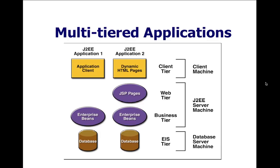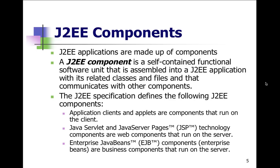The components themselves — one of the interesting components is the bean technology. A Java EE component is a self-contained functional software unit assembled into an application, with its related classes and files, that communicates with other components. Applications, clients, and applets run on the client computer, while Java servlets, server pages, and enterprise beans run on a server. This is another server technology.